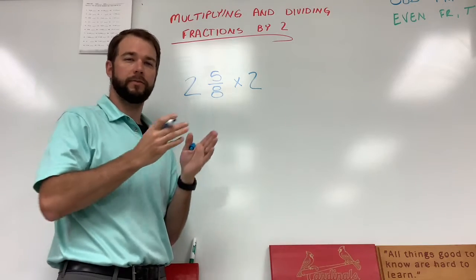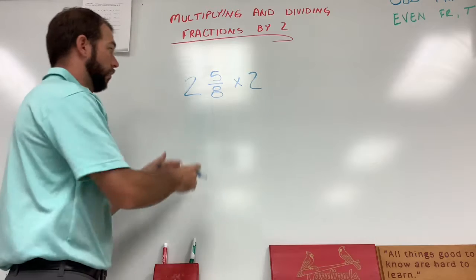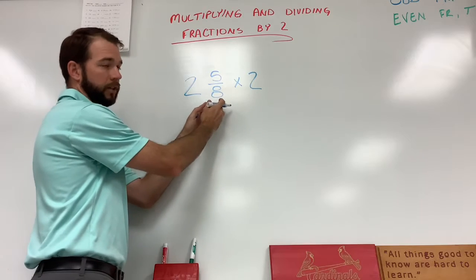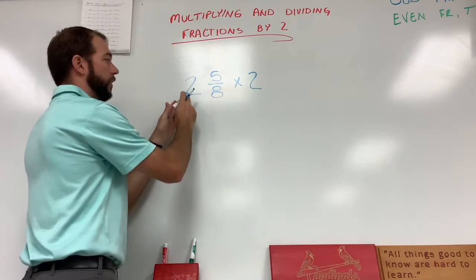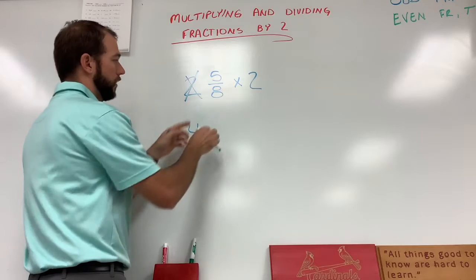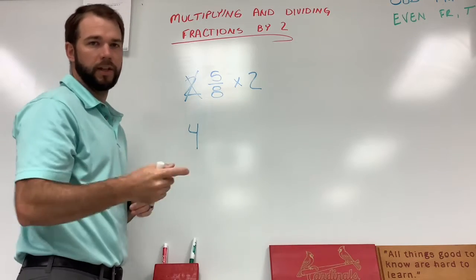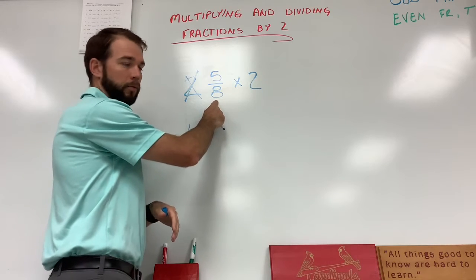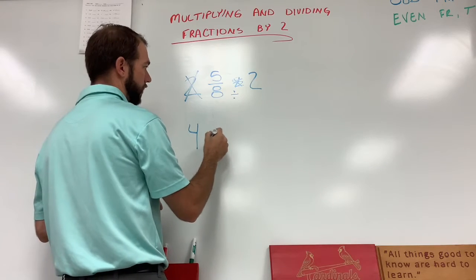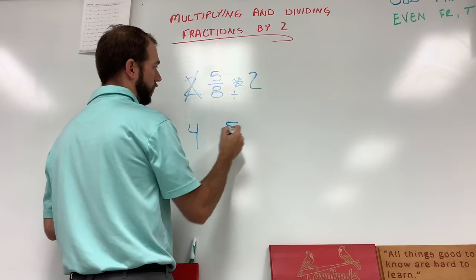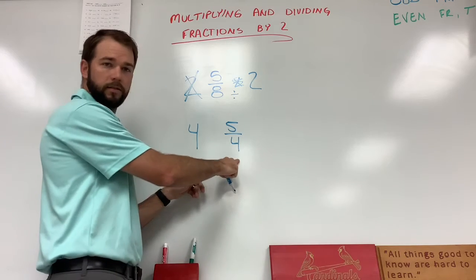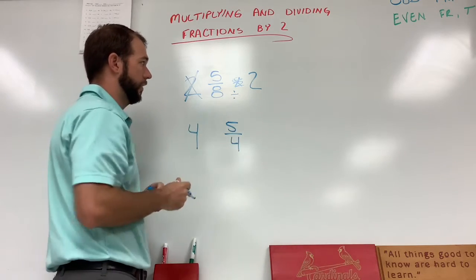Same process, except now we have two different math problems in one. We're going to take the whole number and multiply it by two, and then take the fraction and multiply that by two. So two times two gives us four — we're done with the two. Now we're going to do five eighths times two, just like we did with the last problem. We divide the bottom number by two: the top stays the same as a five, and eight divided by two gives us four. So these are the two numbers we multiplied by two.